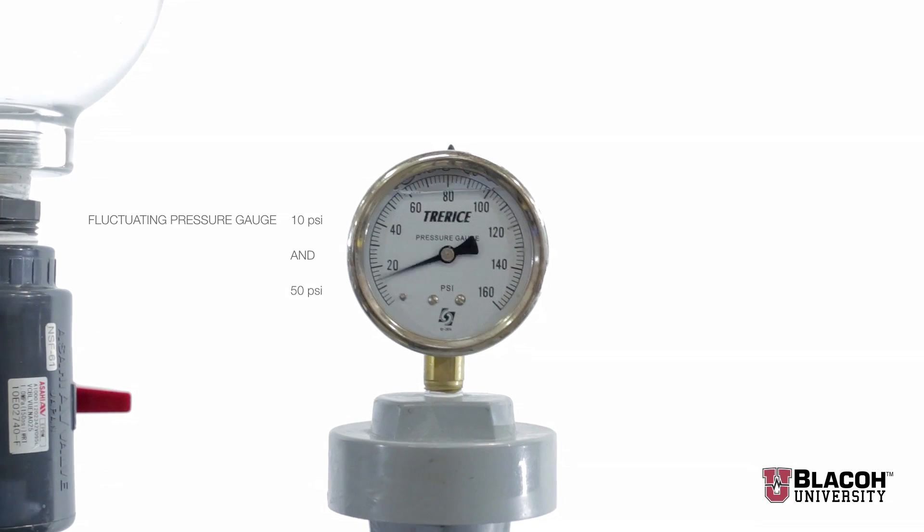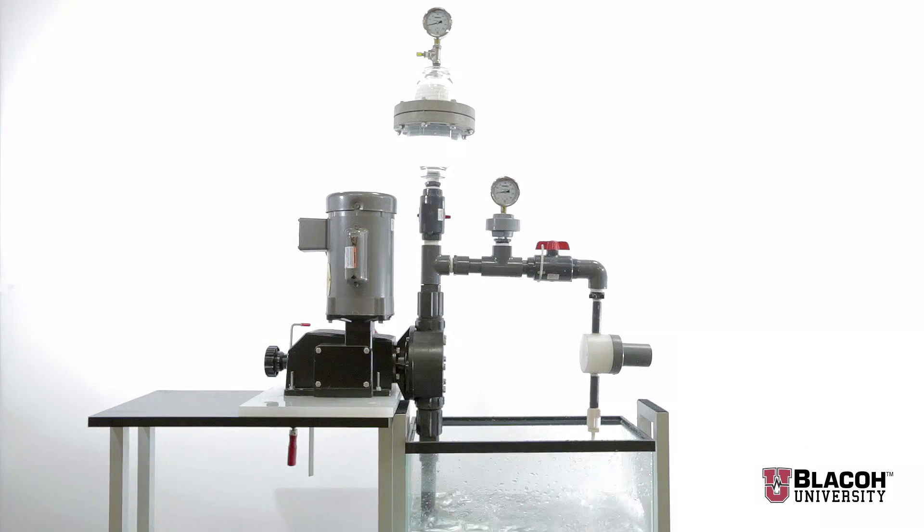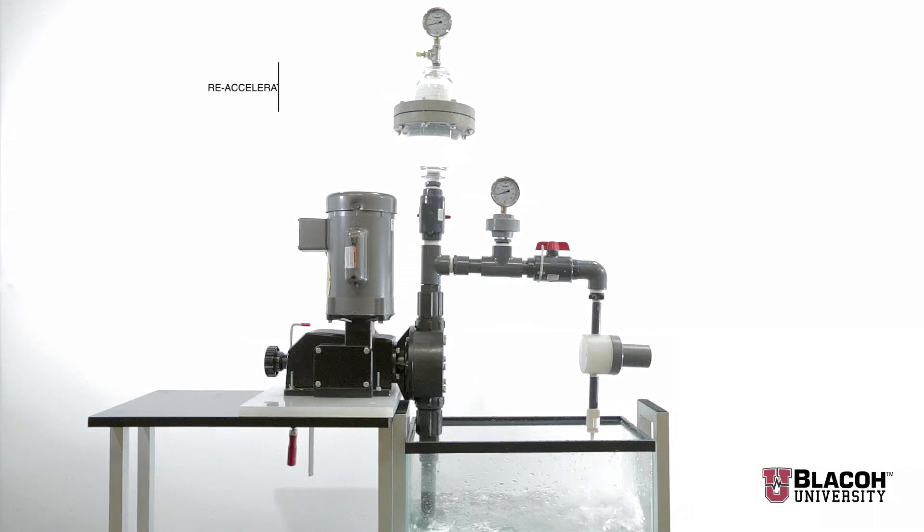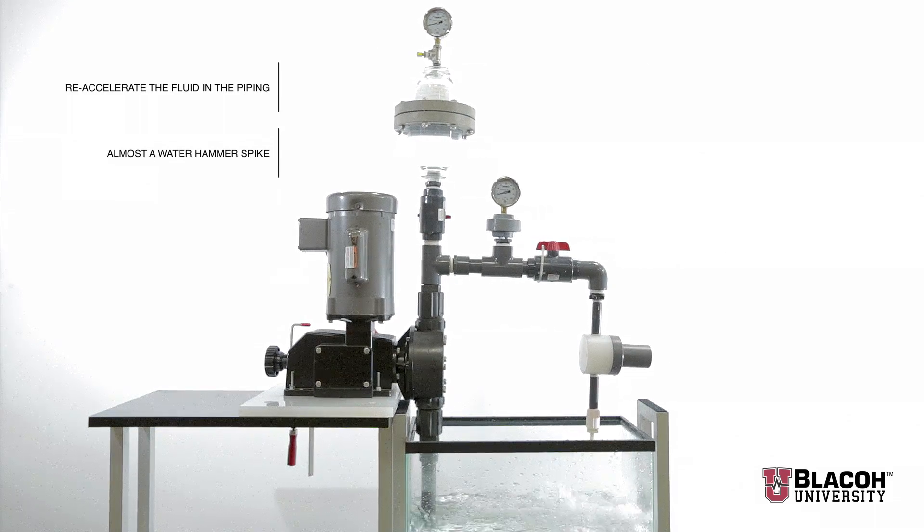The metering pump discharges a very small volume of liquid per stroke. That small fluid volume must re-accelerate the fluid in the piping and in doing so creates almost a water hammer spike.